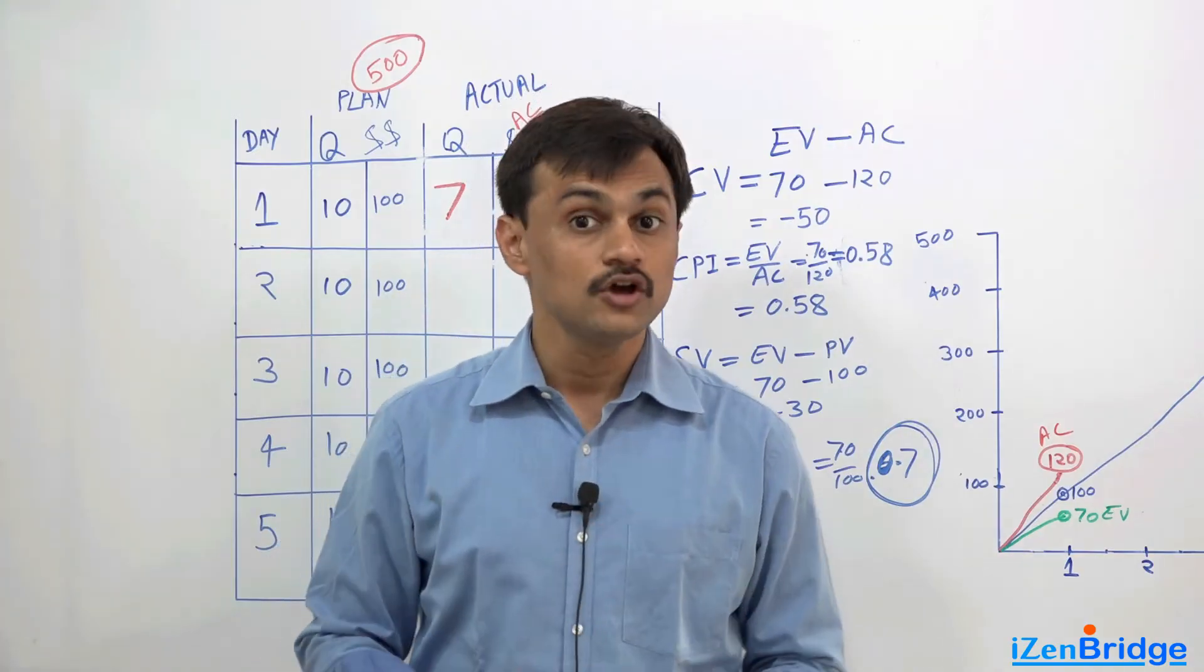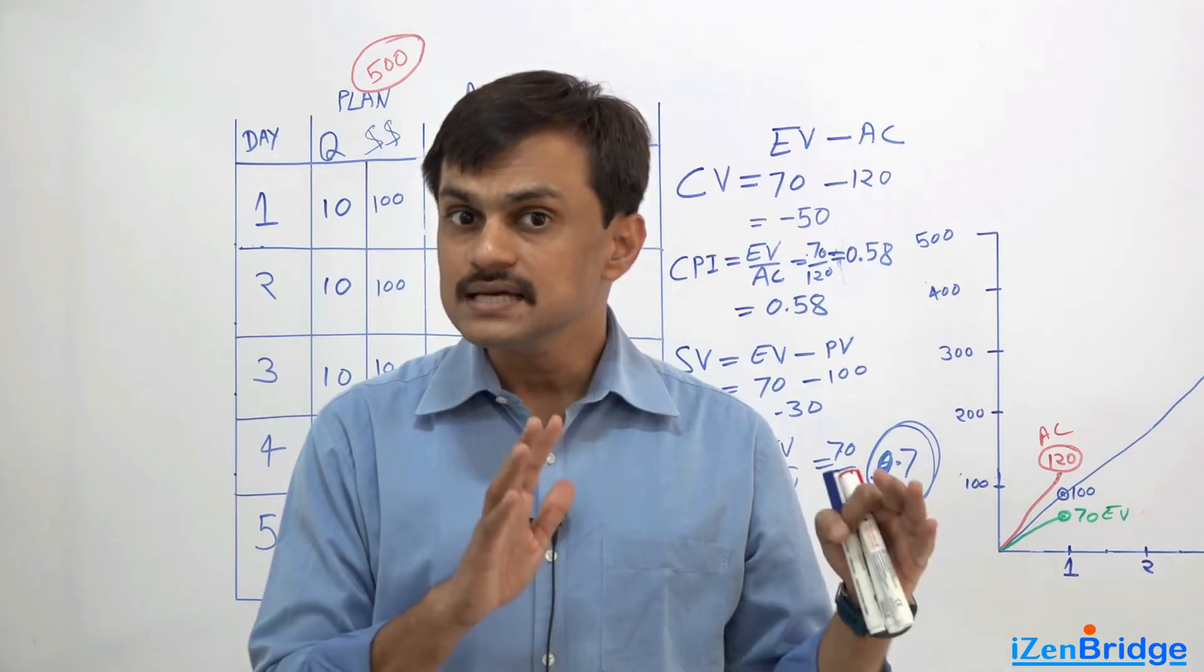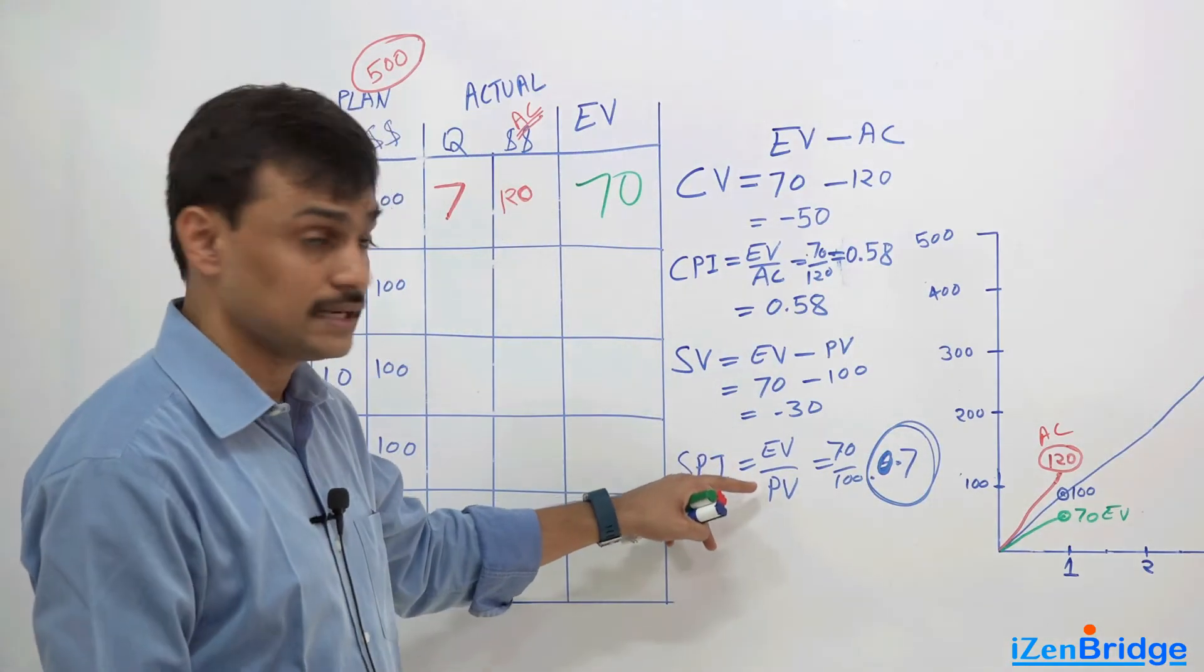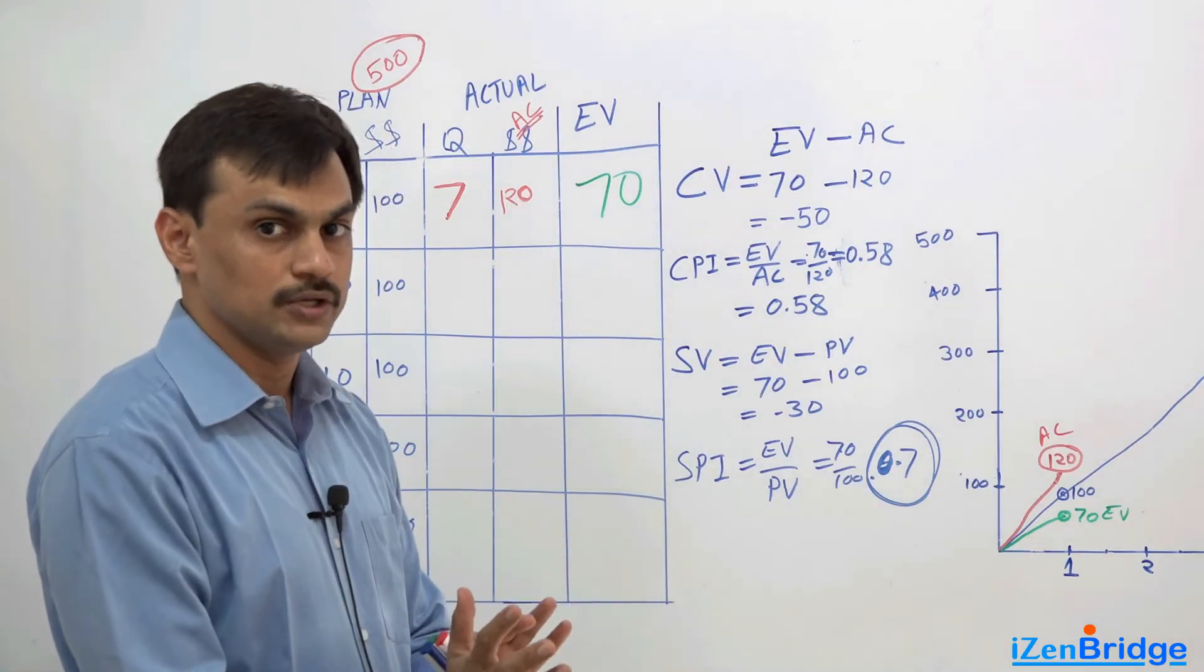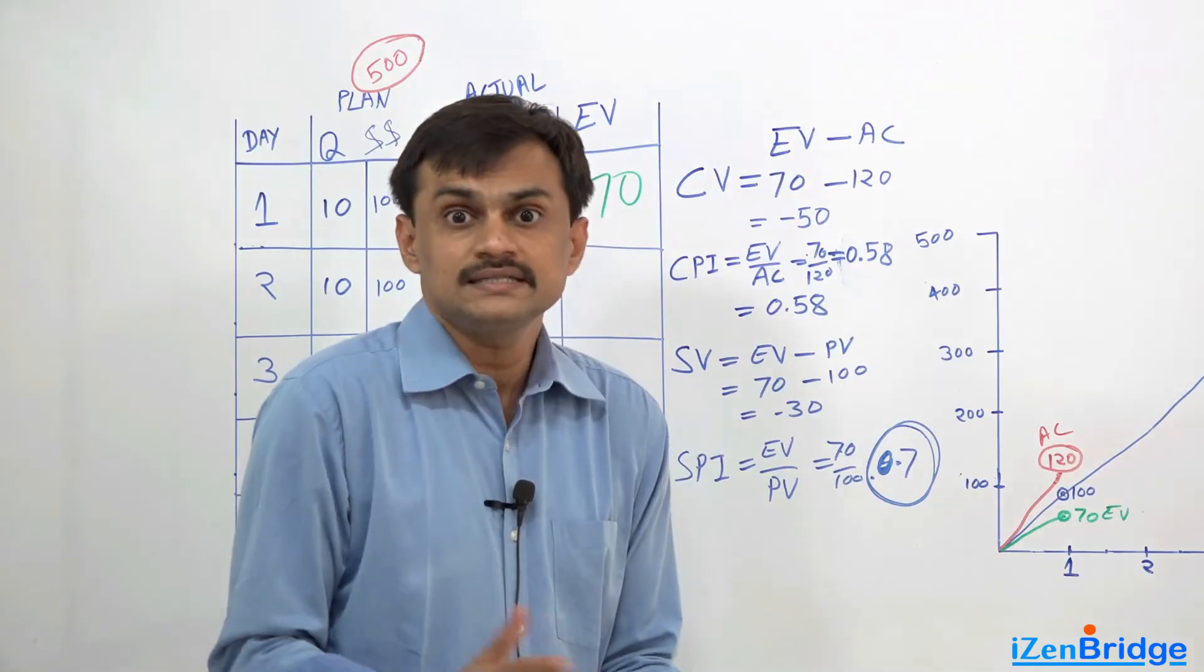If it is more than 1, it means we have completed more than planned work. It has nothing to do directly with the actual cost. You see, the actual cost is not here. It is only about earned value and planned value. So we planned to have 100, but we earned 70.